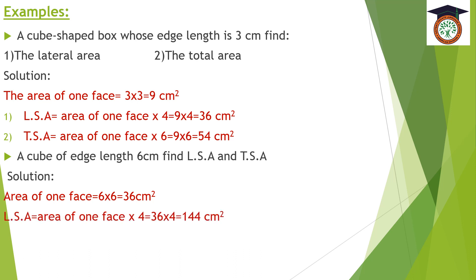The lateral surface area equals area of one face times 4, equals 36 times 4, equals 144 centimeters squared. For the total surface area, it equals area of one face times 6, equals 36 times 6, equals 216 centimeters squared.